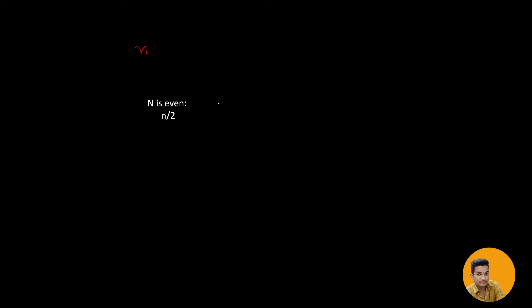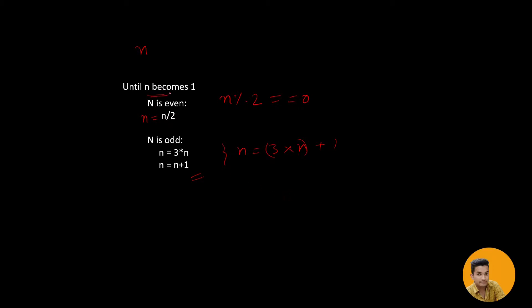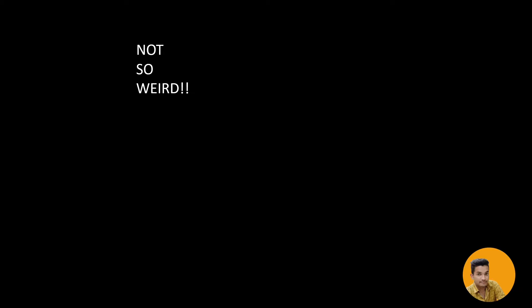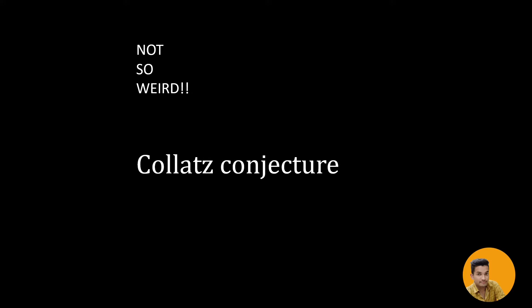Let us look at the pseudo code. We accept the number n, then check if n is even using the mod operation — if the remainder when divided by 2 is 0, the number is even, so we divide by 2. If it is odd, we multiply by 3 and add 1. We keep doing this until the number becomes 1. This algorithm is actually the Collatz conjecture — a process to make any positive number eventually reach 1.